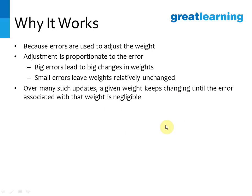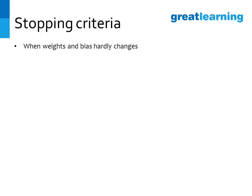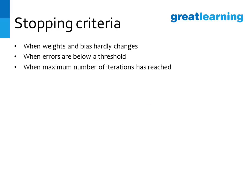When you do this many times, through many iterations, the weights keep changing until the error associated with the weights is negligible. After several iterations, the weights do not change very much, and at this point you consider this the final model. But how do you know when to stop? There are three ways: first, when weights and biases hardly change — meaning you are very near the optimal value; second, when errors fall below a threshold — when the error is in an acceptable range; third, when the maximum number of iterations has been reached — for example, if you set a maximum of 1000 iterations, whatever has happened in 1000 iterations is taken as final.